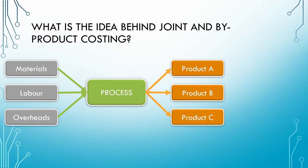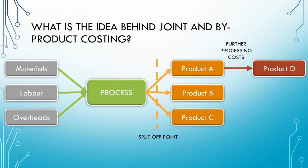It is important to note that for joint processes, we cannot distinguish between the different products until a specific point known as the split-off point. Before this split-off point, we cannot trace the costs to the individual products — this is very important to remember. After the split-off point, where the products are separately identifiable, the products may be subject to further processing. These further processing costs can be traced to the individual products to which they relate.